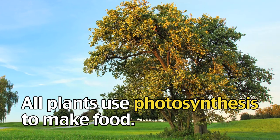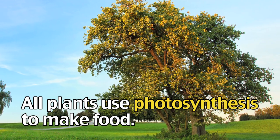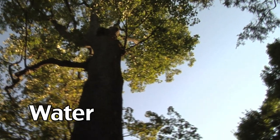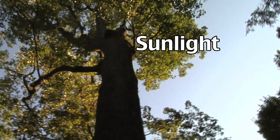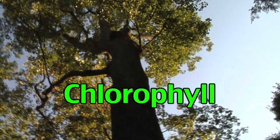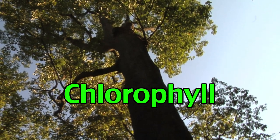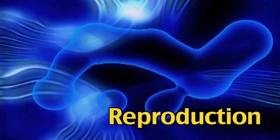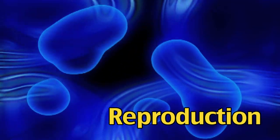The tree is different altogether — it creates its own food through photosynthesis. It uses carbon dioxide, water, and sunlight to produce chlorophyll to eat. All three organisms reproduce in order to preserve their species.